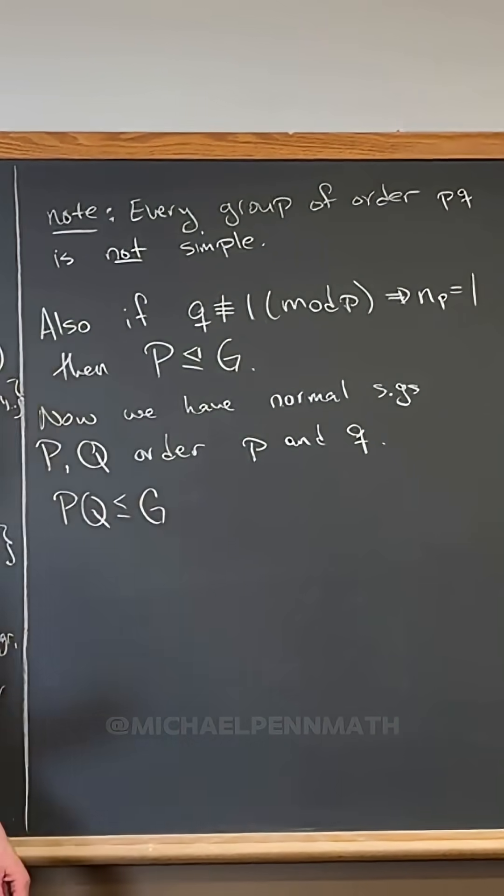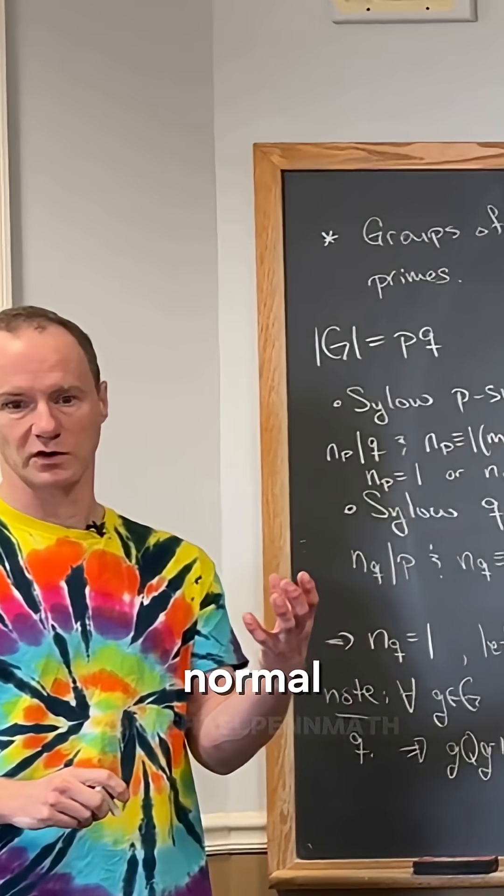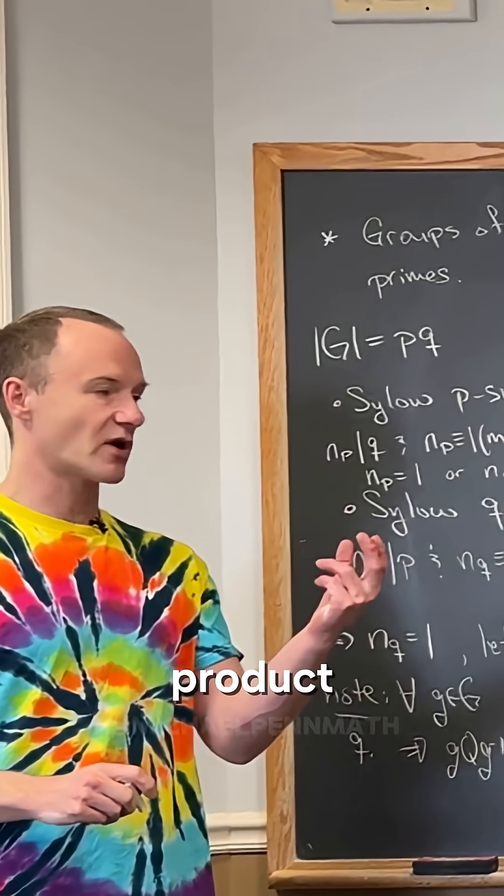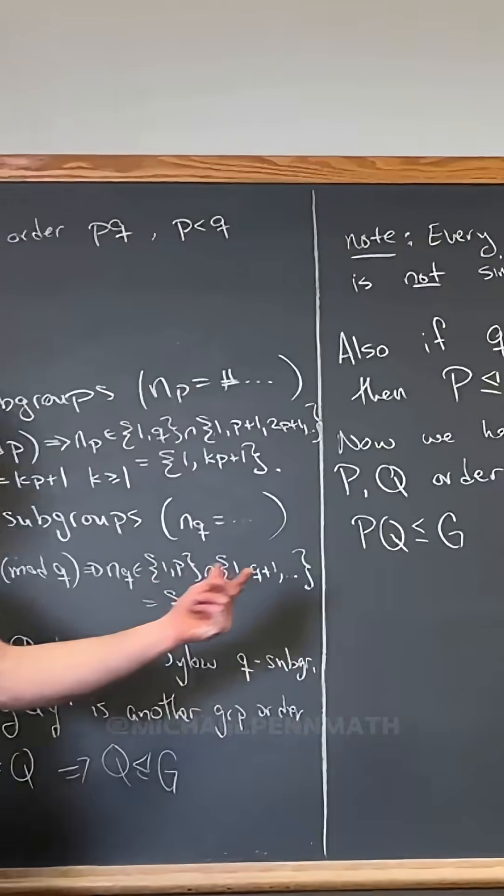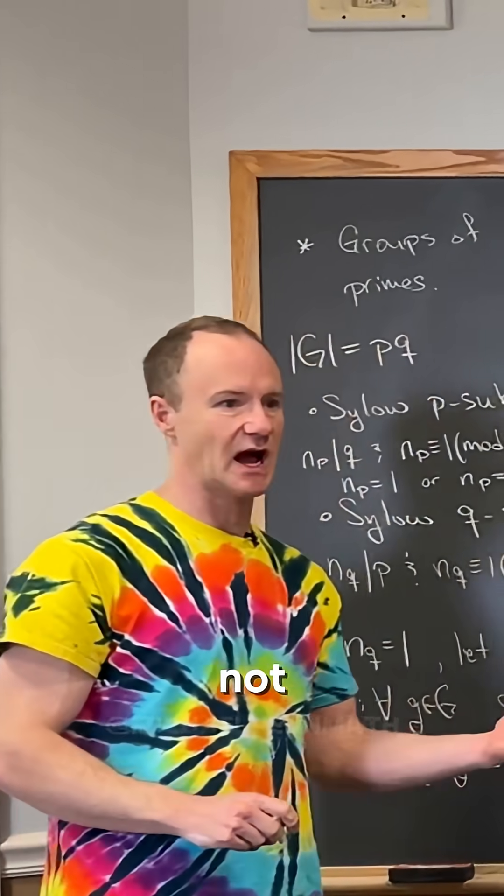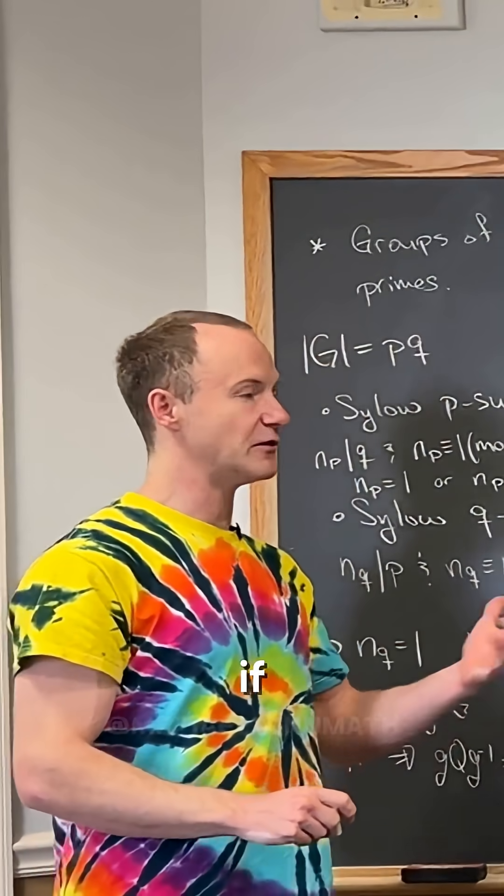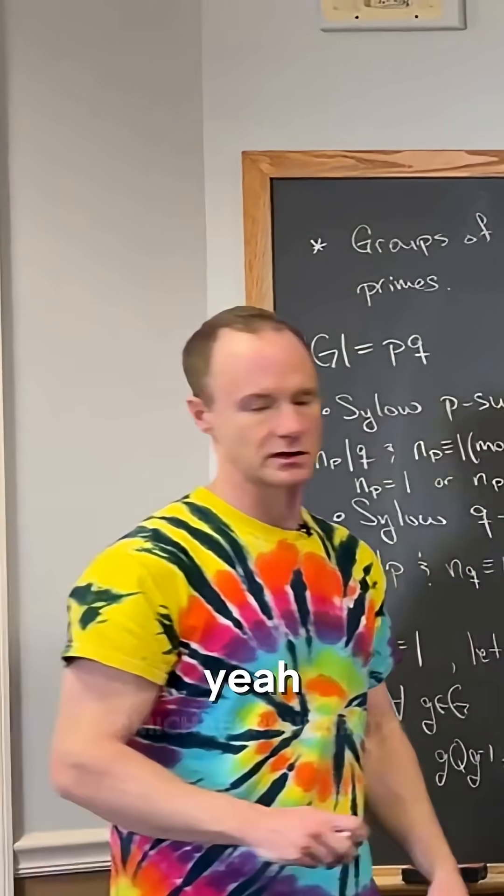Right, because anytime you've got a single subgroup that's normal and you take its product with another subgroup, you always get a subgroup. Now if you've got two non-normal subgroups here and you smash them together like this, it's not going to be a subgroup. But if you've got one of them that's normal, you're okay. And in this case we have one of them that's normal.